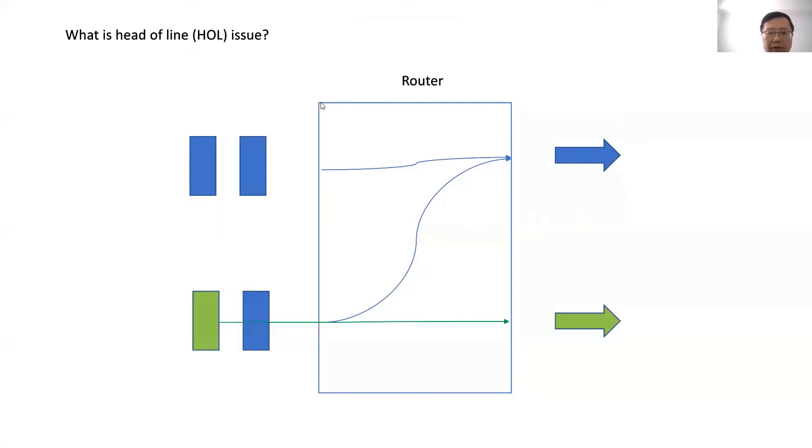Assume here we have a router. It has two input ports and two output ports.